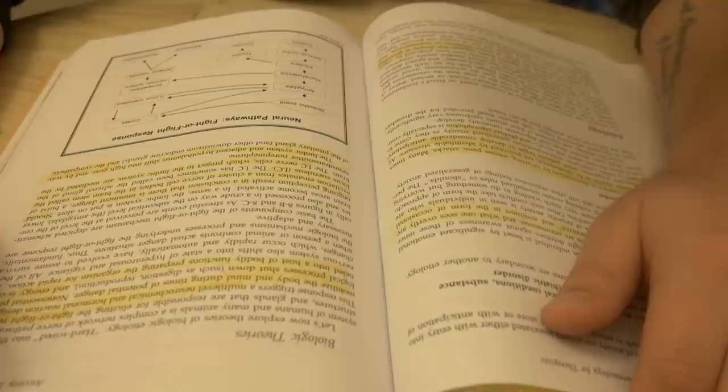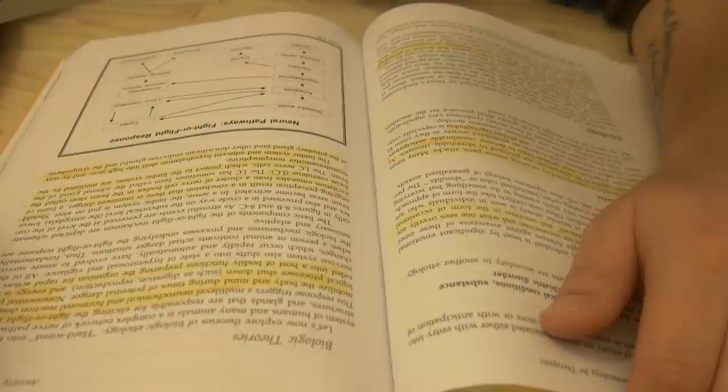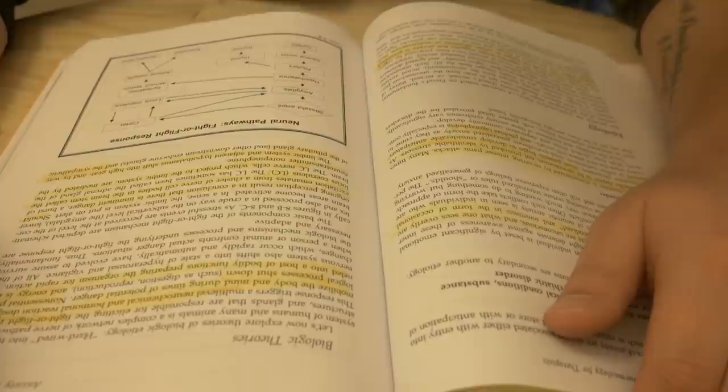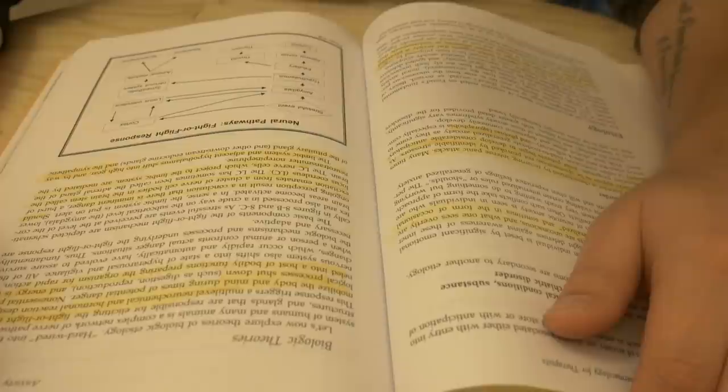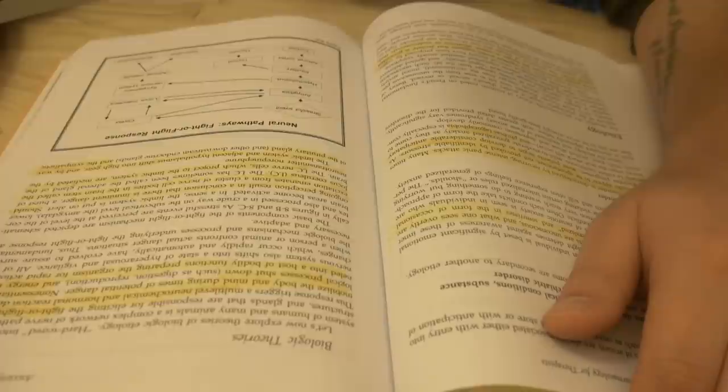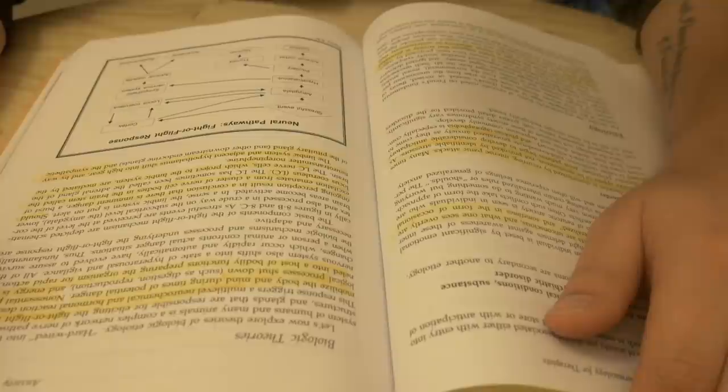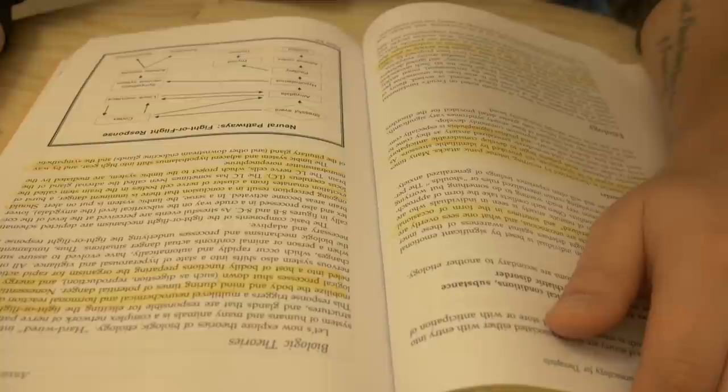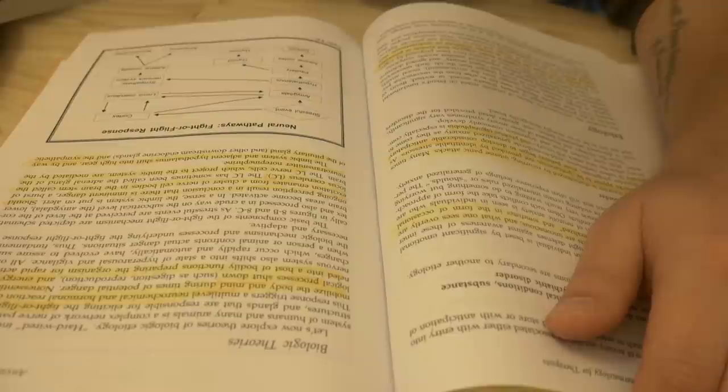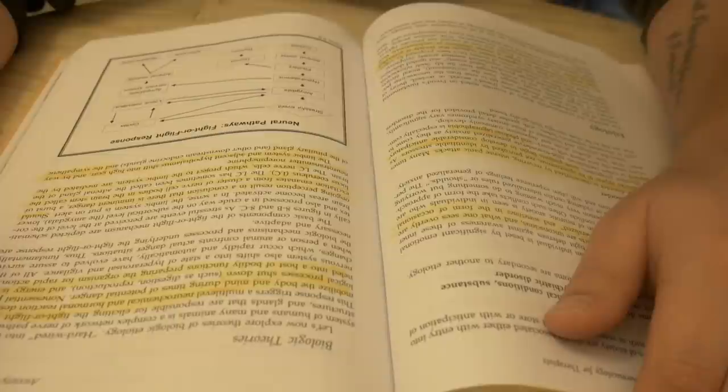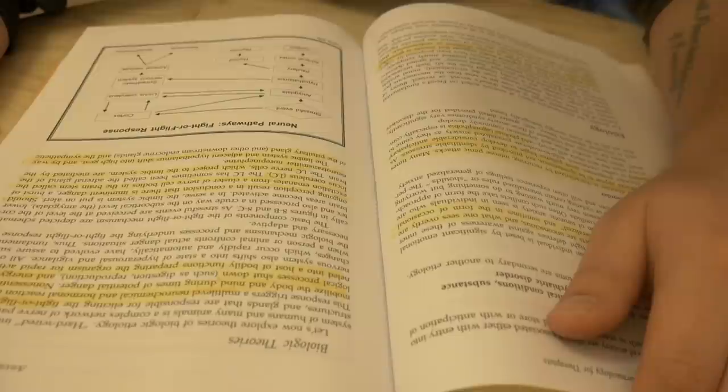Hardwired into the nervous system of humans and many animals is a complex network of nerve pathways, brain structures, and glands that are responsible for eliciting the fight or flight response. This triggers a multilevel neurochemical and hormonal reaction designed to mobilize the body and mind during times of potential danger. Non-essential physiological processes shut down, such as digestion and reproduction, and energy is channeled into a host of bodily functions preparing the organism for rapid action. The nervous system also shifts into a state of hyperarousal and vigilance. All of these changes, which occur rapidly and automatically, have evolved to assure survival when a person or animal confronts actual danger situations. Thus, fundamentally, the biologic mechanisms and processes underlying the fight or flight response are necessary and adaptive.